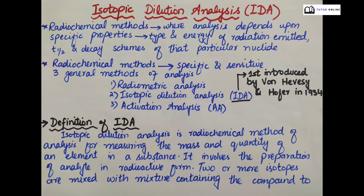In this topic, we will study radiochemical methods, definition and introduction of IDA with equation, then applications, advantages and limitations of IDA. Radiochemical methods are the methods in which analysis depends upon specific properties. These properties include the type, energy of radiation emitted, half-life and decay schemes of that particular nuclide. Radiochemical methods are both sensitive and specific.